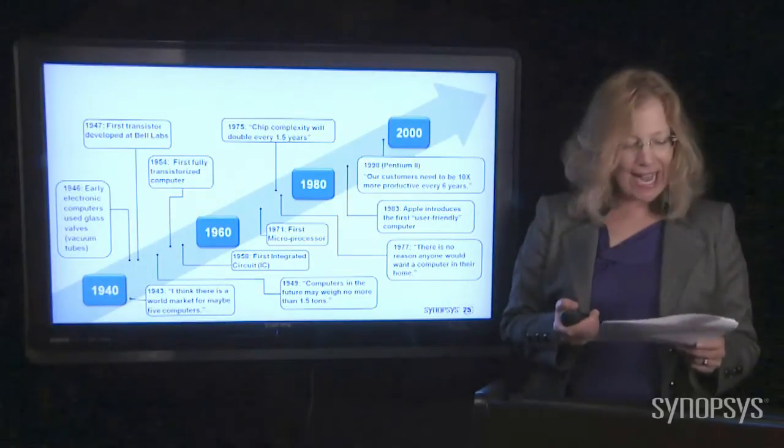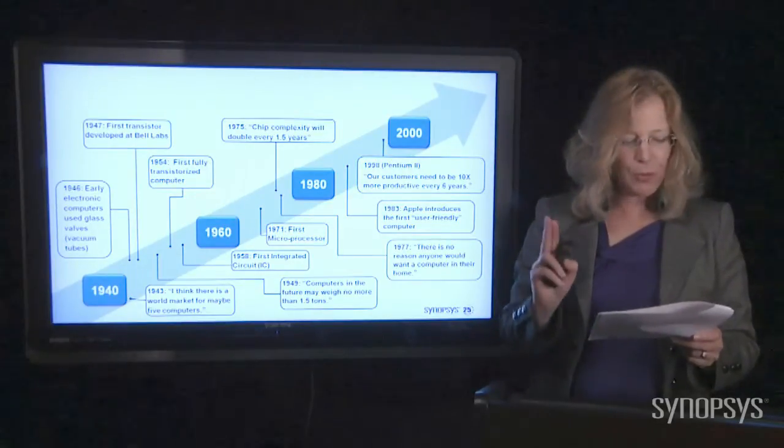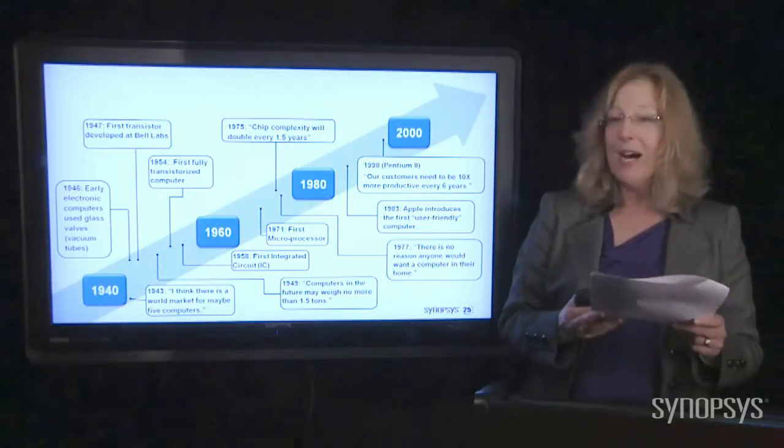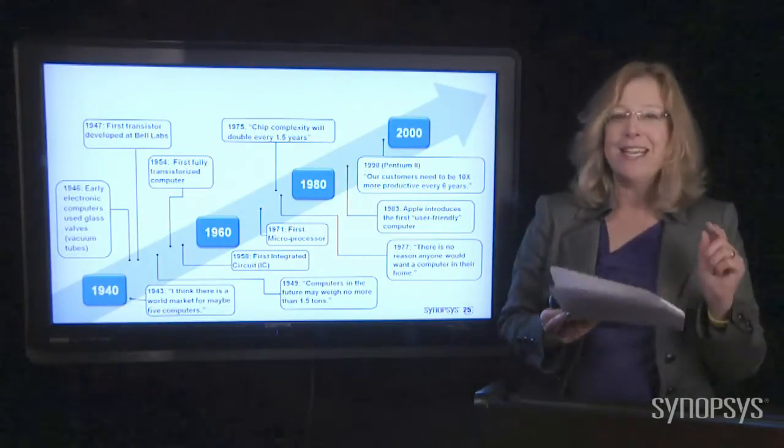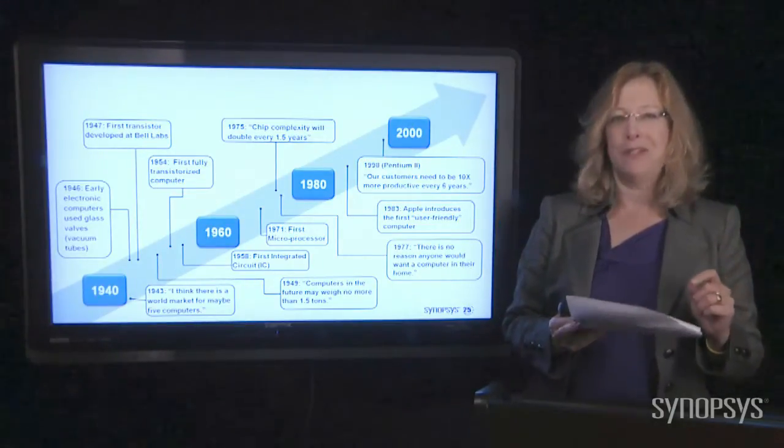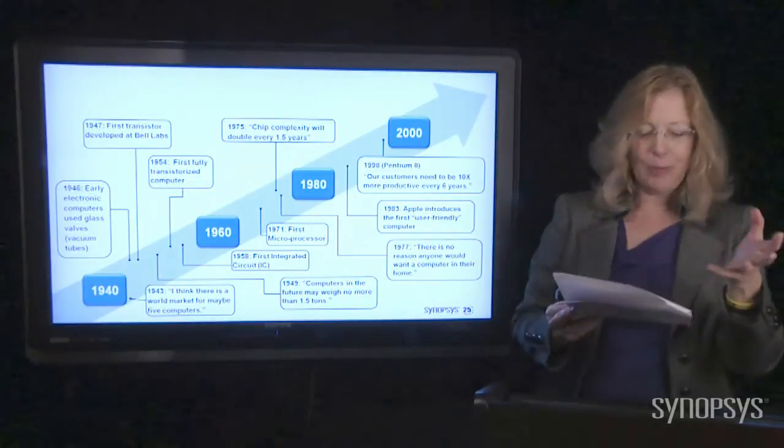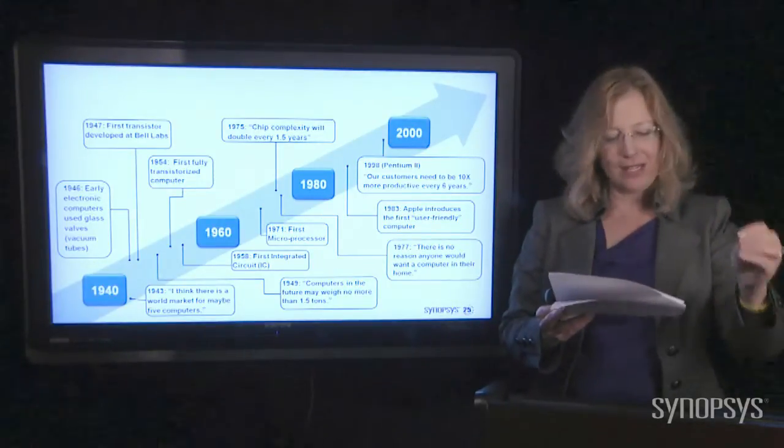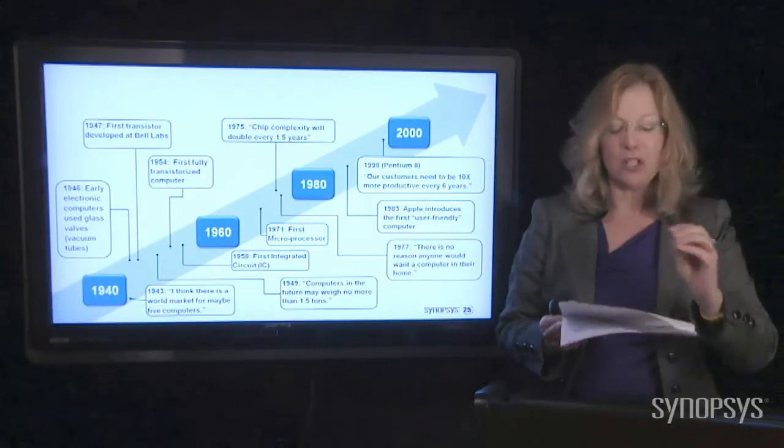In 1998, the Intel Pentium II processor was invented by Intel, and now it had 7.3 million transistors. So we've gone in a short period of time from 2,000 transistors up to 7 million transistors.